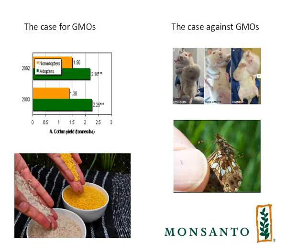You can't grow GMOs as a small farmer using your own seed the way that you could grow traditional or conventional crops. A subsistence farmer might traditionally grow some crops, save some for seed the next year, and mostly provide for their own needs with just a small surplus that they might sell for money to buy the few things they can't produce on their farm. You can't pursue that way of life with genetically modified crops — you have to buy those seeds from a large corporation.